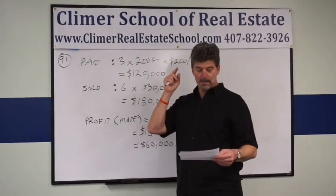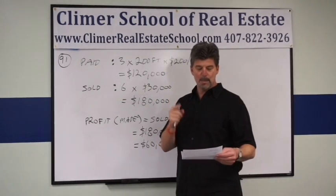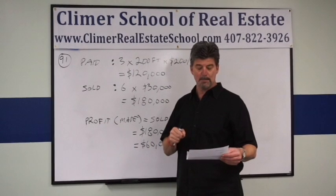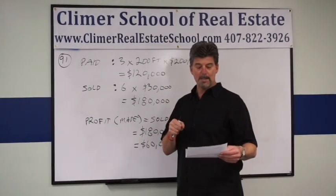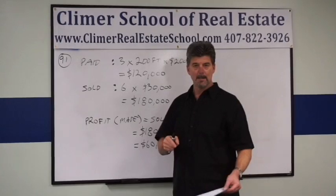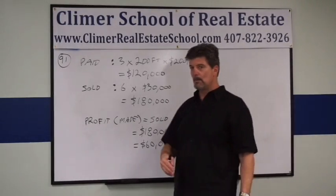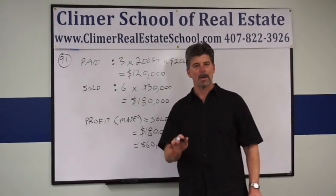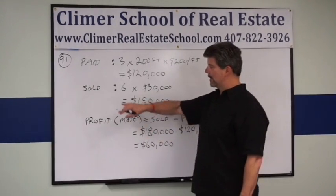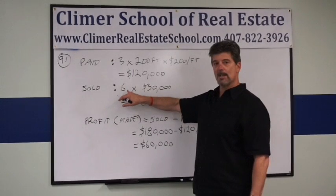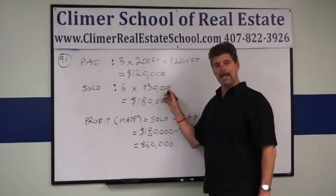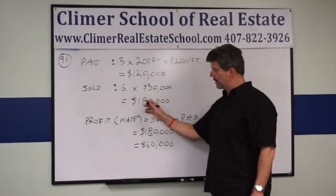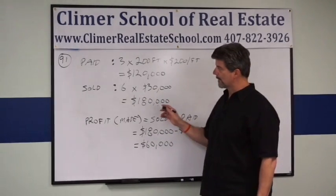The problem further says she subdivided that land into six riverfront lots and sold them for $30,000 per lot. The question asks: what was her percent of profit? Now we have to figure out what she is selling for. Write down the information — keep it organized and clean. She sold six lots for $30,000 each, and six times $30,000 gives you $180,000.